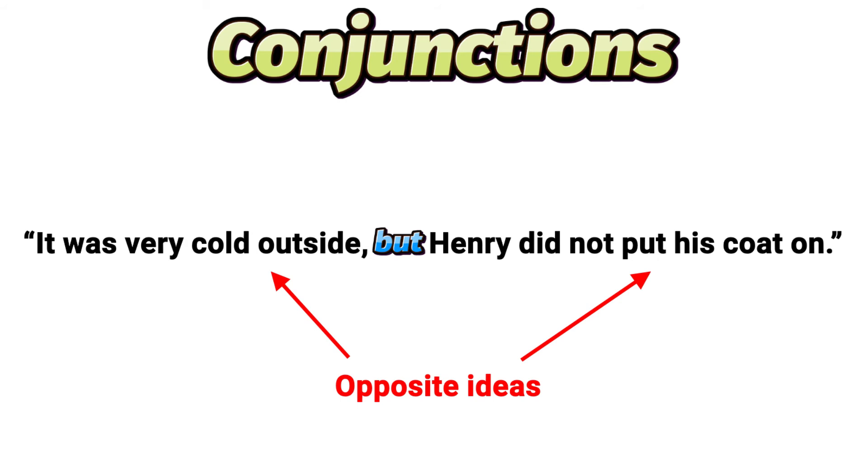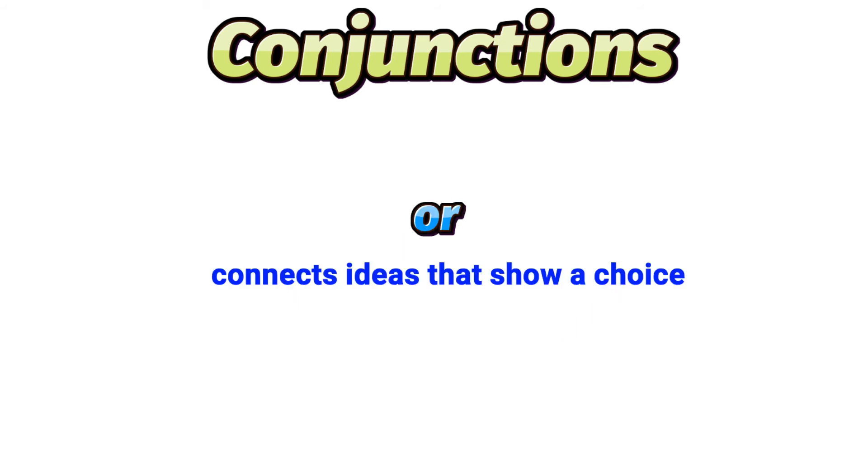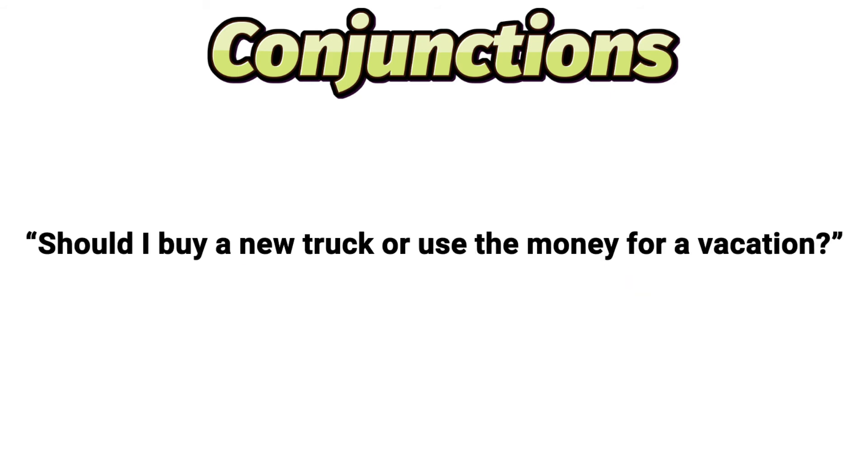When we need to connect two ideas that show a choice, we use the conjunction or. Should I buy a new truck or use the money for a vacation? The conjunction or is connecting the two options in the choice: buying a new truck or going on vacation.